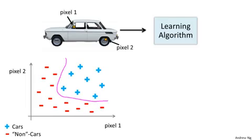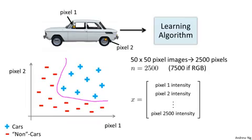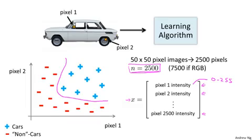What is the dimension of the feature space? Suppose we were to use just 50 by 50 pixel images — pretty small ones, just 50 pixels on the side. Then we would have 2,500 pixels, and so the dimension of our feature space will be n equals 2,500, where our feature vector x is a list of all the pixel intensities — the brightness of pixel one, pixel two, and so on. In a typical computer representation, each of these may be values between 0 and 255 giving us the grayscale value. So we have n equals 2,500 for grayscale images. If we were using RGB images with separate red, green, and blue values, we'd have n equals 7,500.